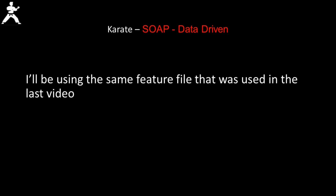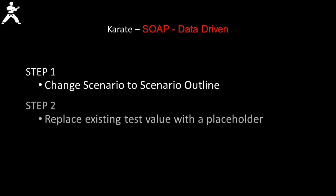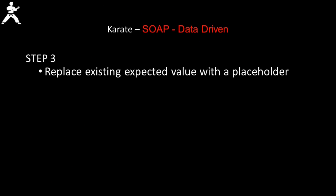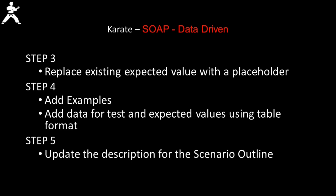For this video, I will be using the same feature file that was used in the last video, just so that it's easier for us. Step 1 would be to change the scenario to scenario outline, then we will replace the existing test value with a placeholder. As step 3, we would replace the existing expected value with a placeholder. Then step 4 would be to add sample data — add data for test and expected values using the table format. And step 5 would be to update the description for the scenario outline.